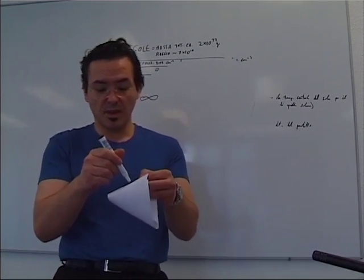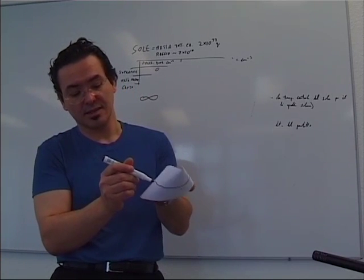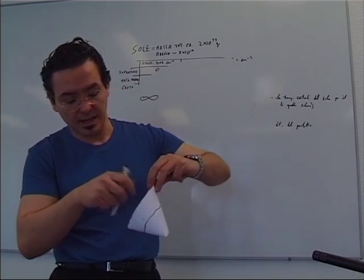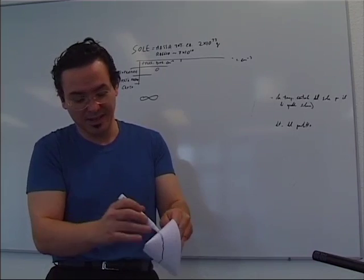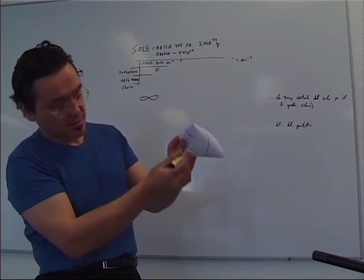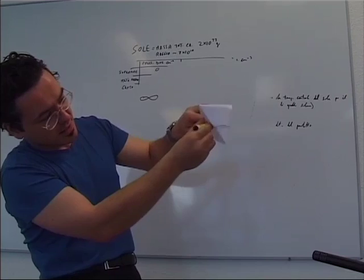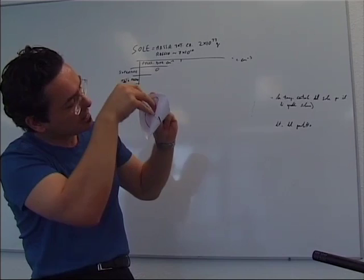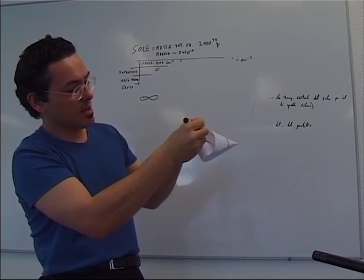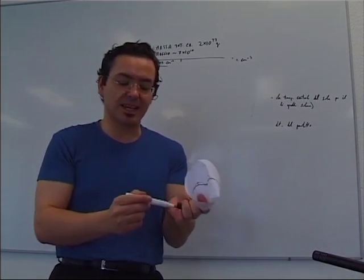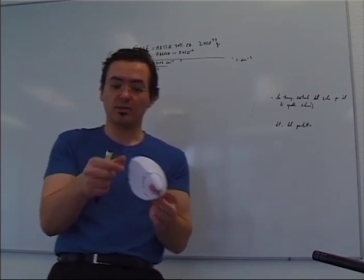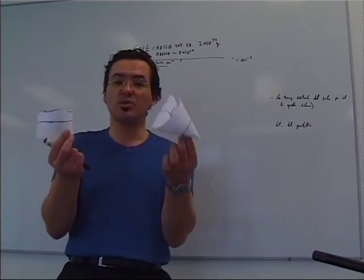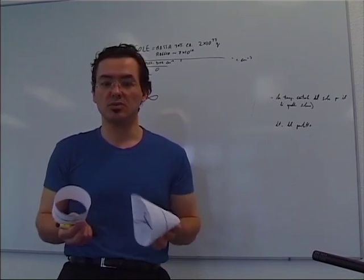Adesso prendiamo il nastro di Möbius e ripetiamo l'esperimento della penna. Come abbiamo notato, io posso tracciare sul cerchio la linea senza staccare mai il pennello, il pennarello, però soltanto su uno dei due lati o una delle due superfici, cioè o quella esterna o quella interna. Ma non posso senza mai staccare il pennarello disegnare ambo le superfici. Proviamo a fare la stessa cosa con il nastro di Möbius.